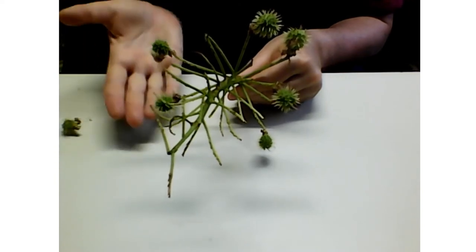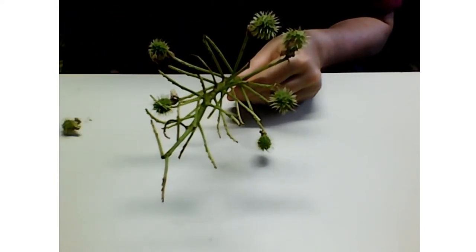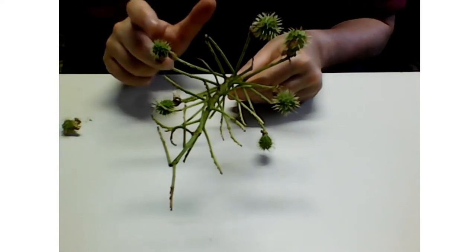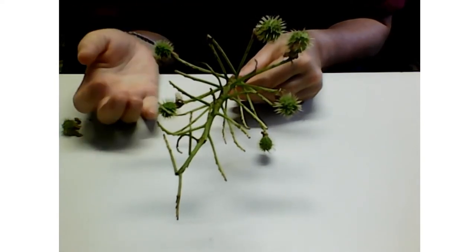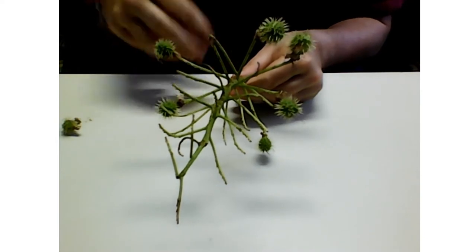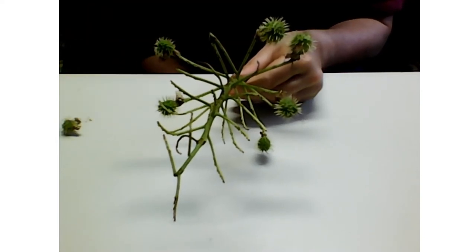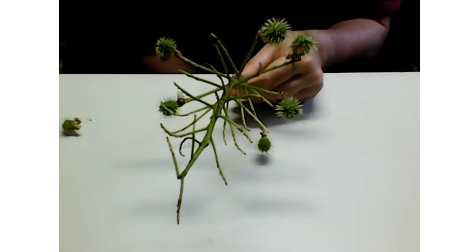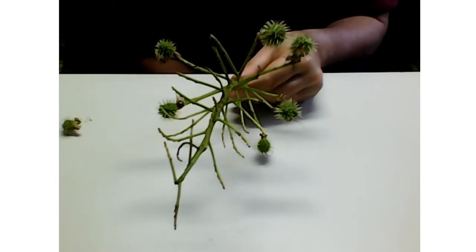The buckeye seed that I showed you that some people think looks like a deer's eye, those fall to the ground and then those would become new buckeye trees if they get into the ground and start to grow, if they get water and sunlight and they have the right conditions to grow.